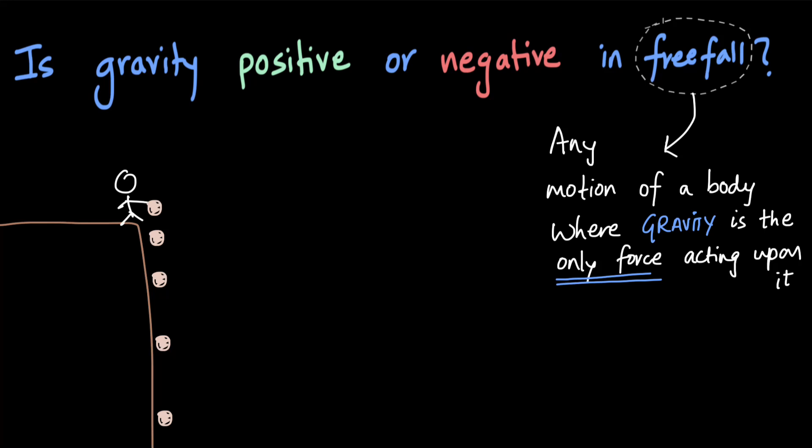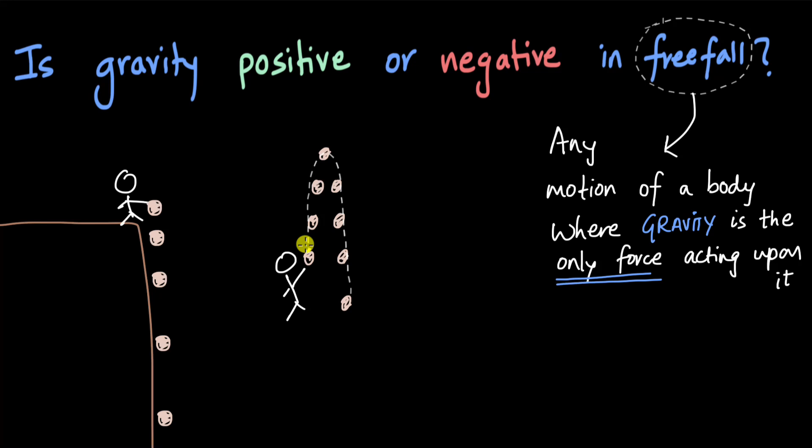Also, if someone throws a ball up and then the ball comes down, the moment the ball leaves the person's hand, from that moment onwards there is only one force acting on the ball and that is the force of gravity. Throughout the entire journey of the ball, the force of gravity is acting downwards all throughout, causing a constant downward acceleration from when the ball left the hand till it reaches the ground.